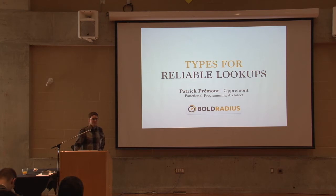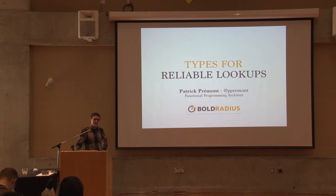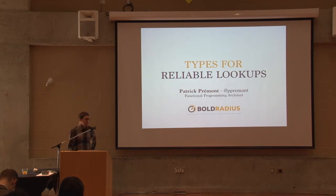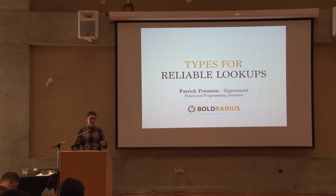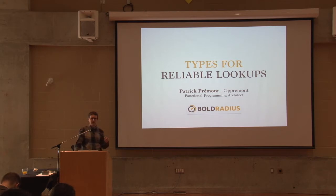Today I'd like to talk about the data structure we use very often called a map and how it's not the best fit for every single situation because it does not enforce some invariants that we'd like to have enforced. The general theme of this presentation is about how to use Scala's advanced type system to your benefit. We may be going slightly beyond what you can do comfortably in Scala because we'll be touching dependent types and things like that, but I think it's very interesting to see what we can do.